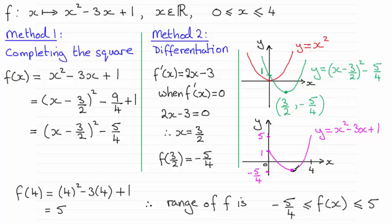So you're going from the minimum point up to the highest point, which is at 5.